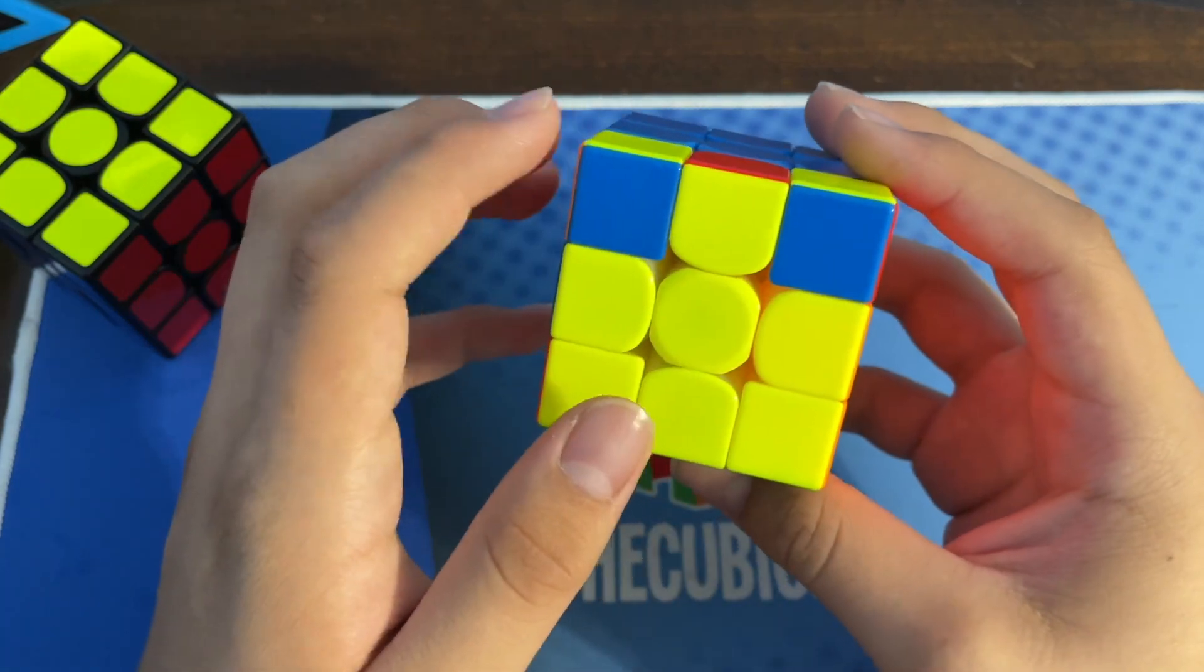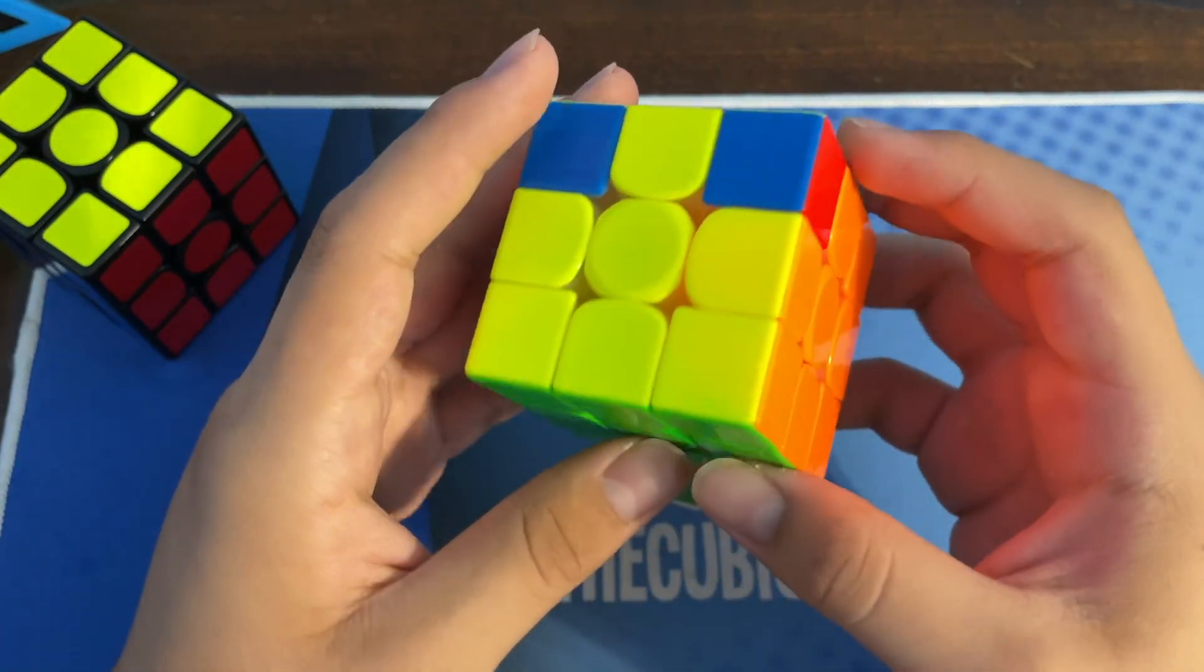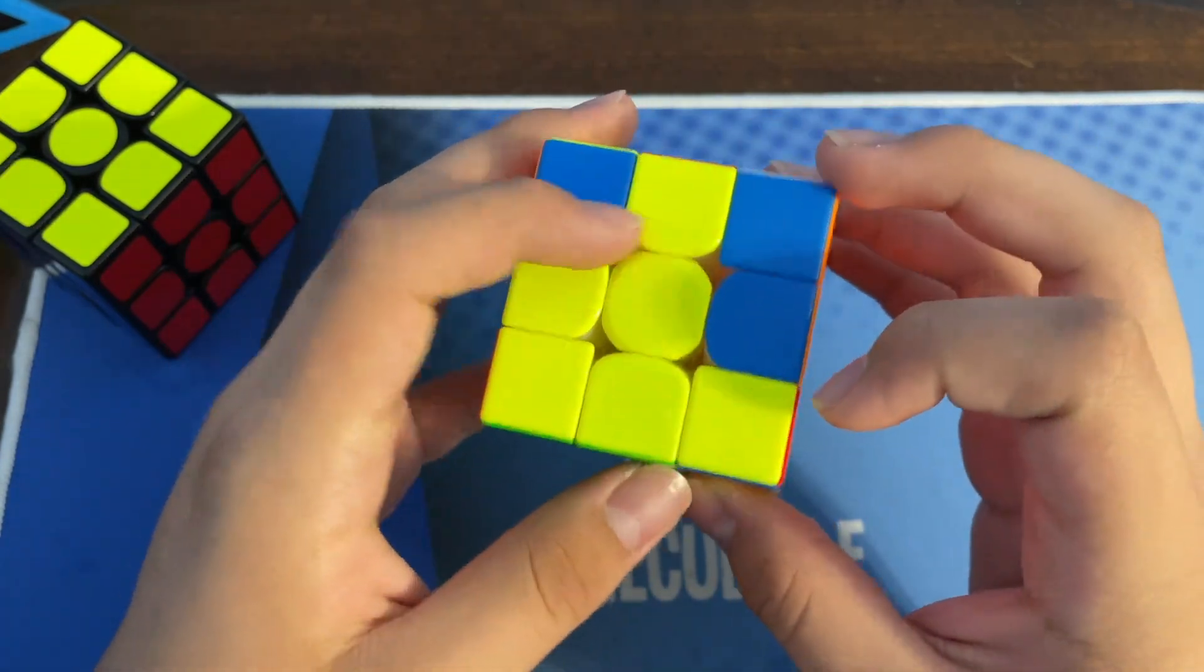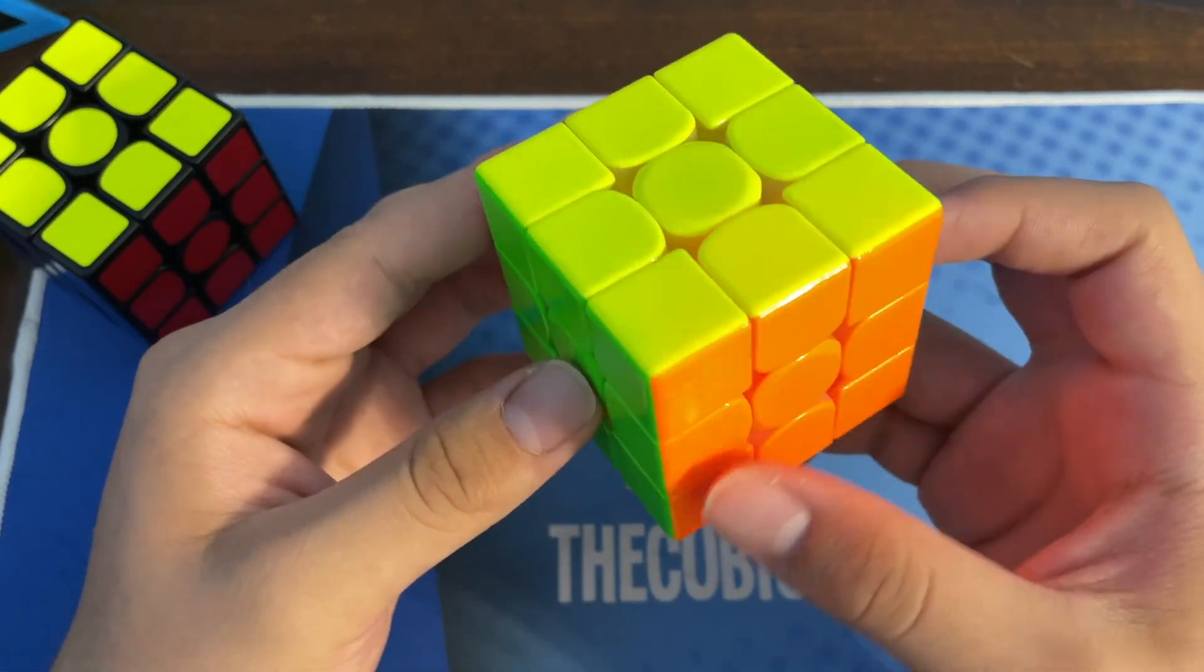This corner and this corner need a swap, and these two need to too. The way you do that is you put the corner here so that way it sets up into a Y perm. You do your Y perm and there you go.